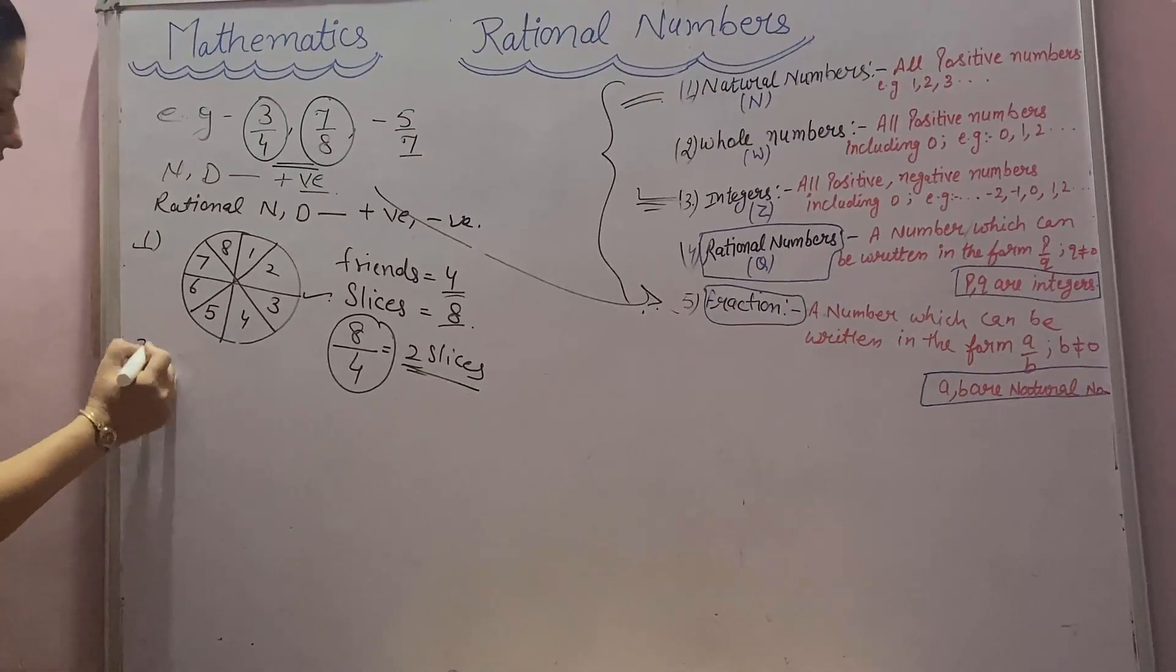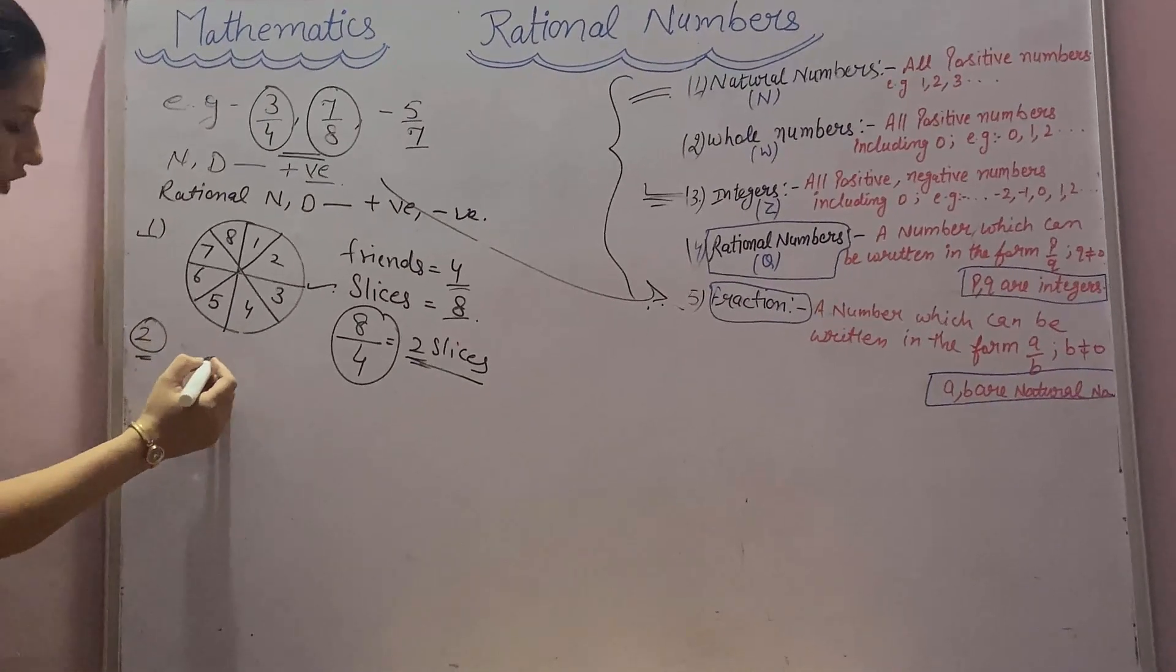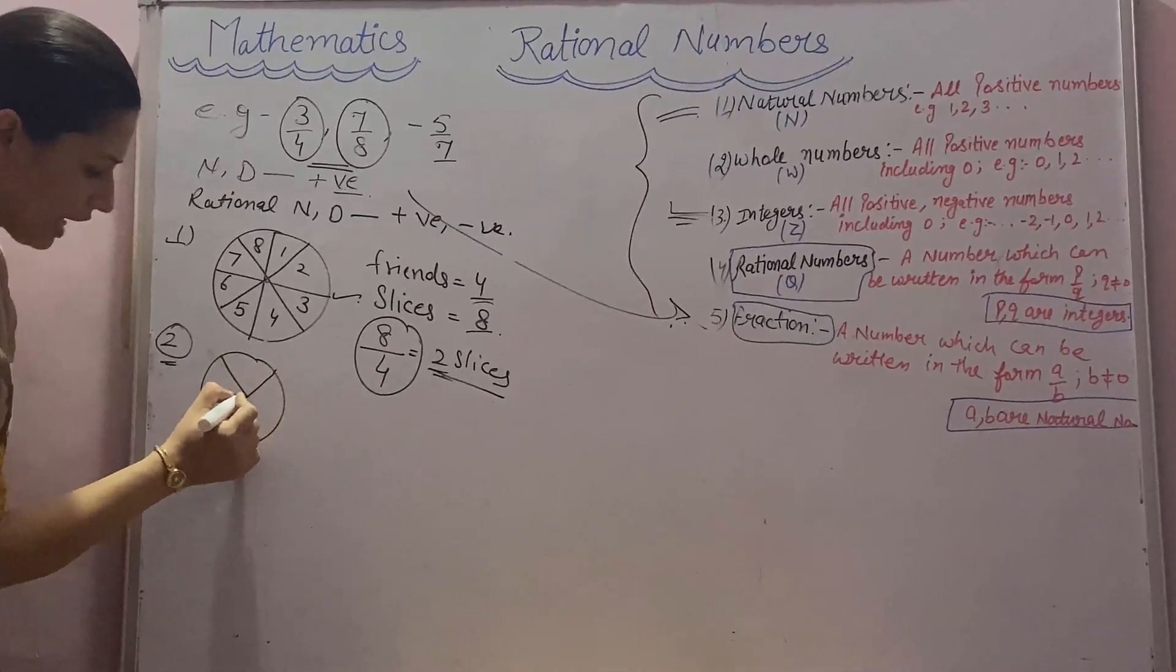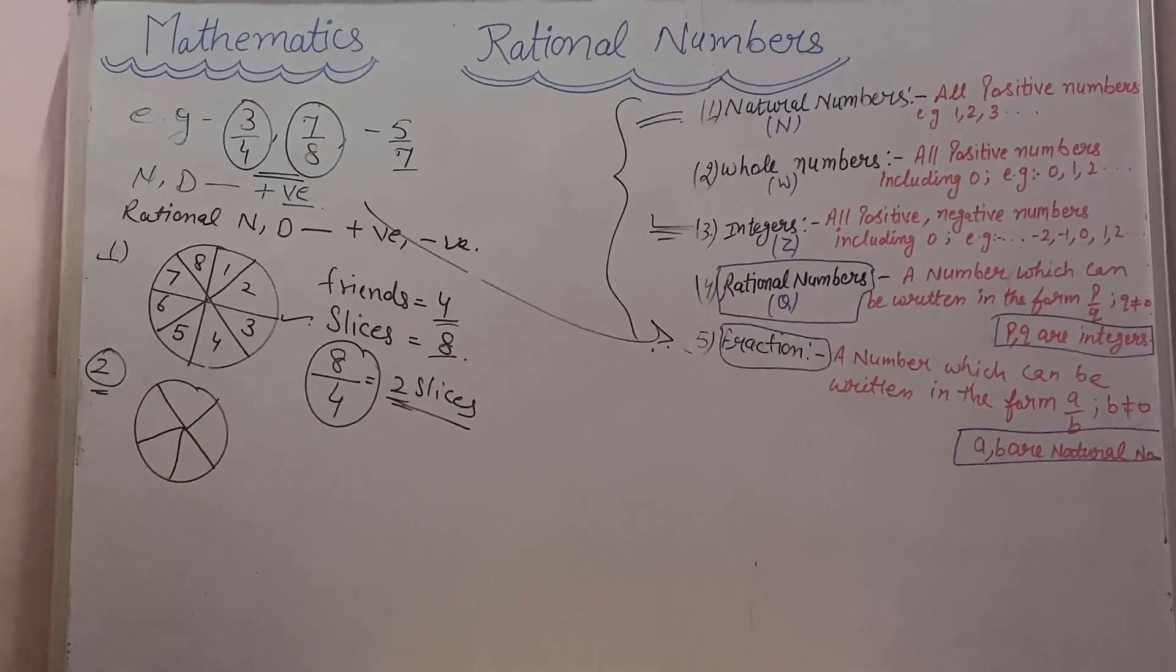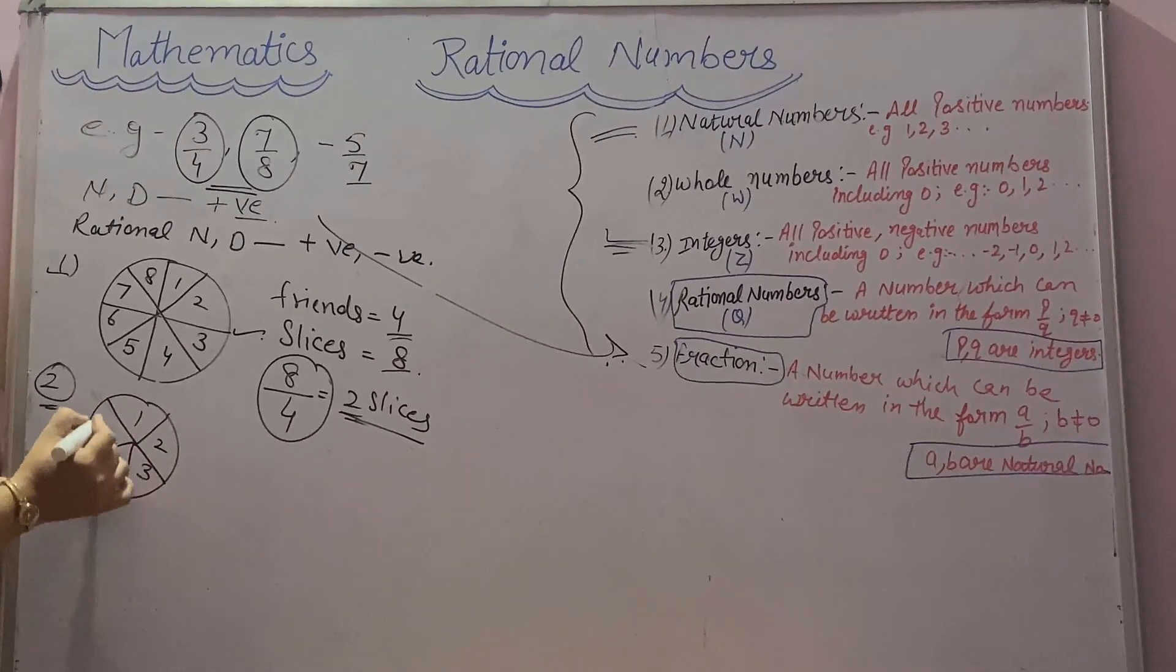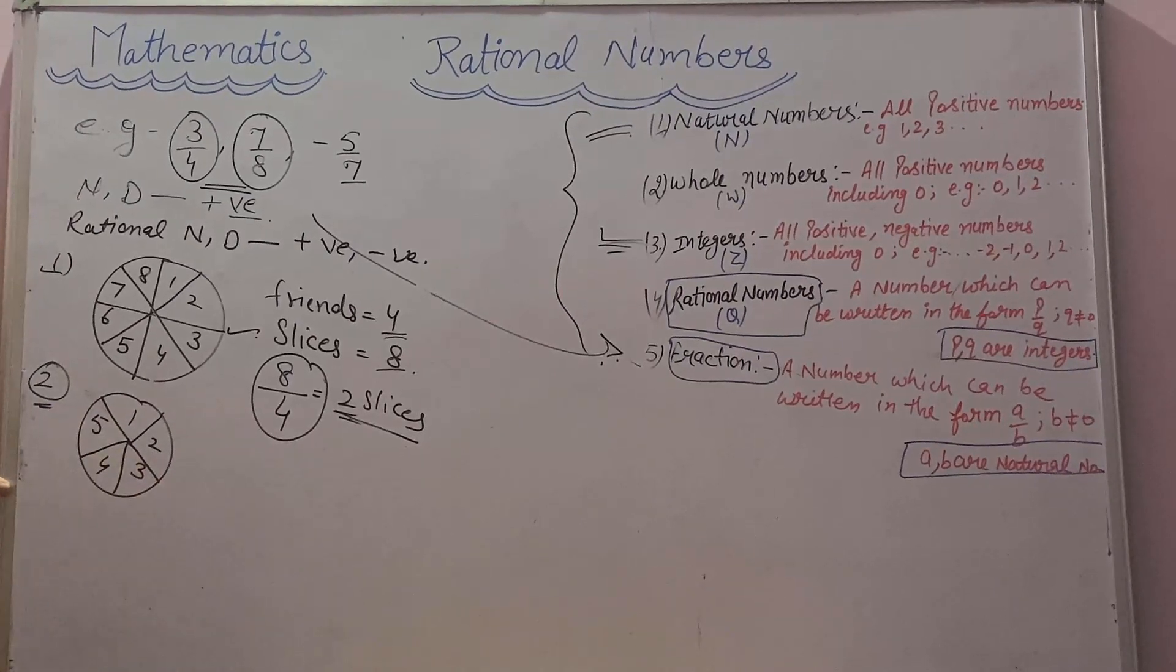Let's take another example. You have a mango box with 5 mangoes. And your mother says to give me 2 mangoes from the box. How will you put this in a rational number form?